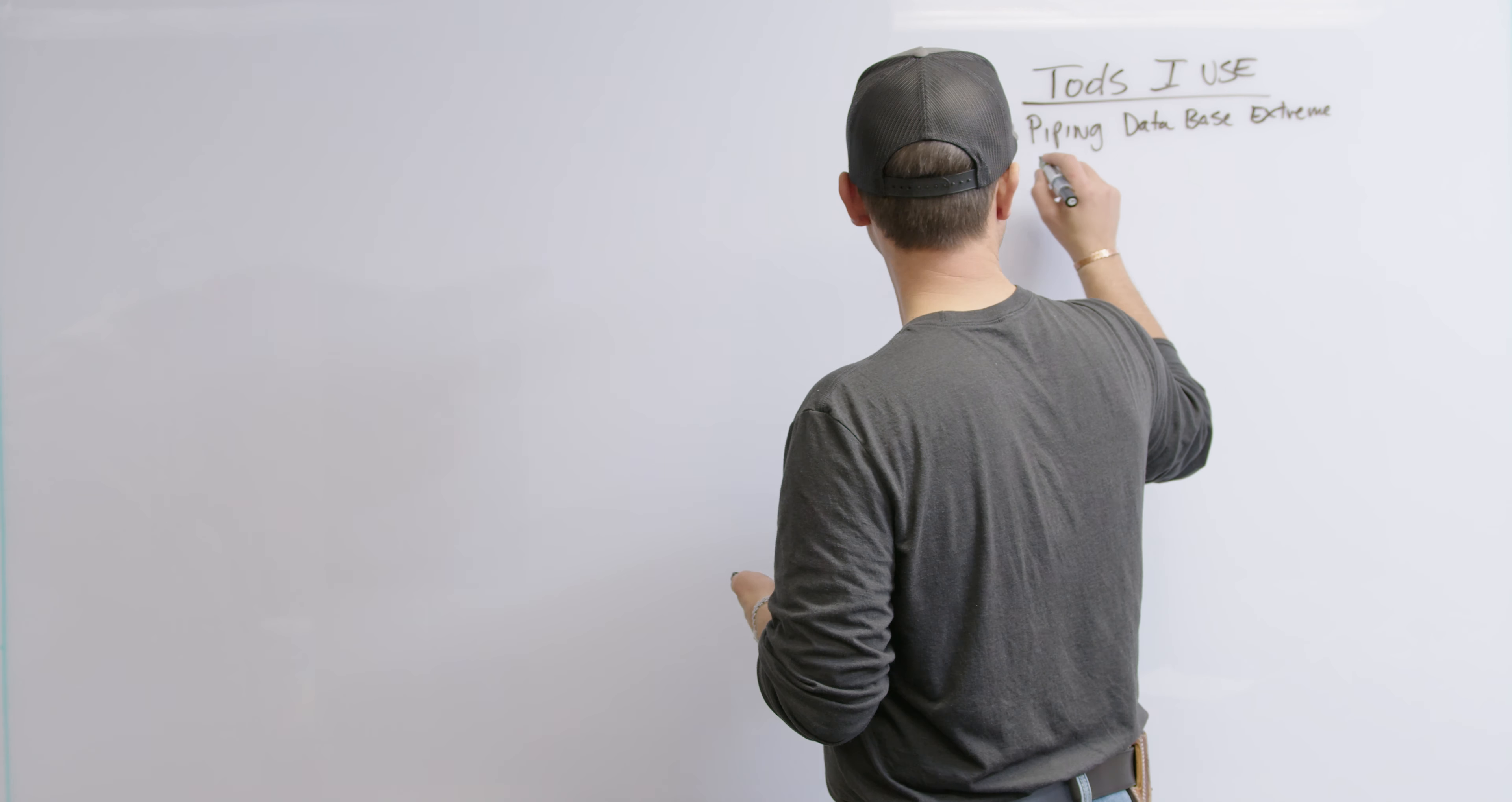So phone app, Construction Master Pro, it's not hard. You can find it. It does fractions. When you read with your tape measure and you break it down into fractions, this is the calculator that you definitely want to use.